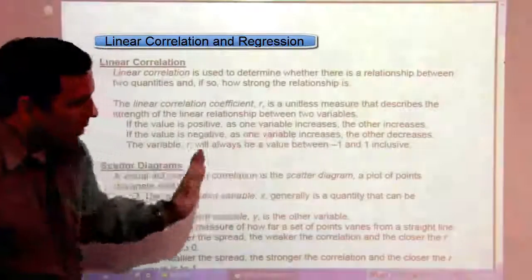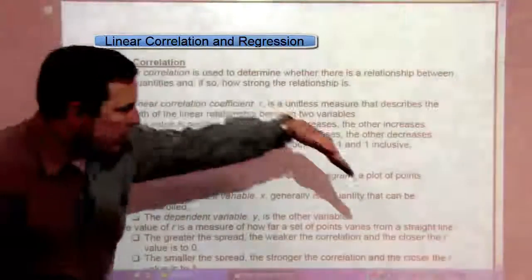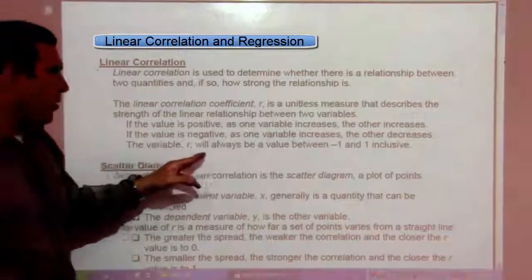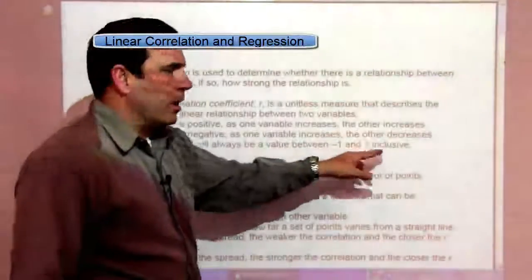So as time goes on, whatever the other quantity is, it's going to go down. The variable R will always be a value between negative one and one inclusive.